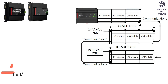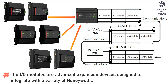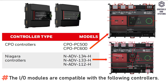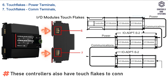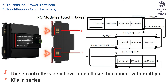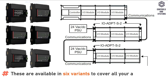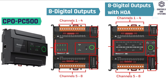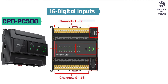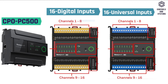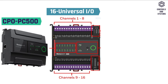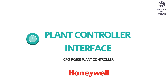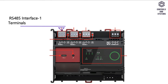I/O Modules: The I/O Modules are advanced expansion devices designed to integrate with Honeywell controllers, compatible with the following controllers. These controllers also have touch flakes to connect with multiple I/Os in series. They are available in 6 variants: 8 Digital Outputs Module, 8 Digital Outputs with HOA Module, 16 Digital Inputs Module, 16 Universal Inputs Module, 16 Universal Input and Output Module, and 16 Universal Input and Output with HOA Module.